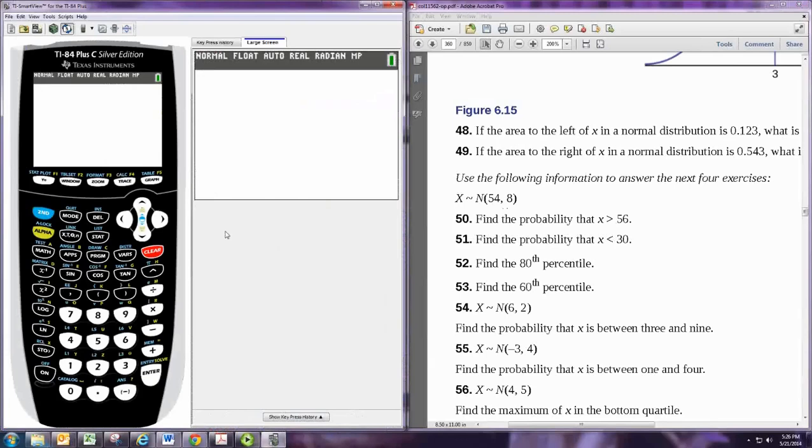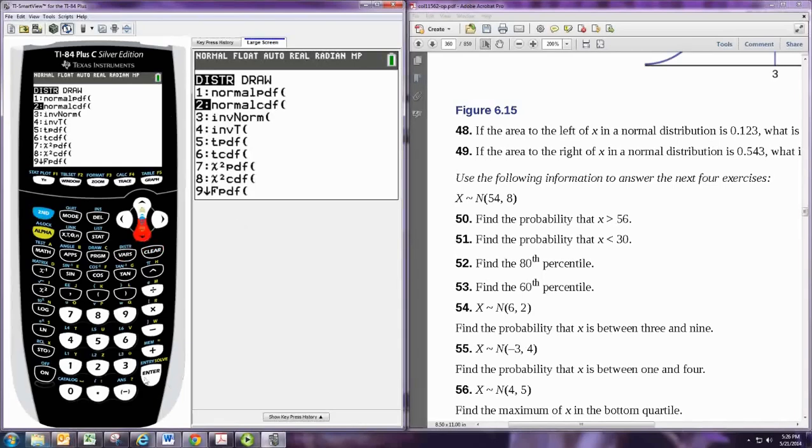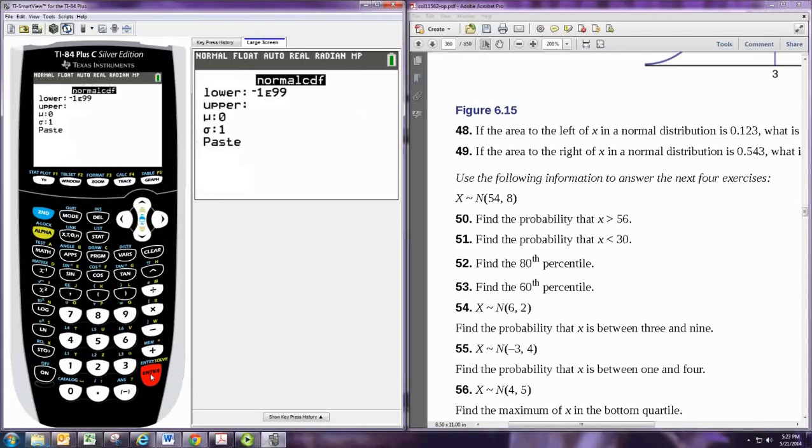In the beginning, we want to find probabilities given values for the random variable. To do this, hit 2nd VARS to go to the distribution menu, then select number 2, normalcdf.